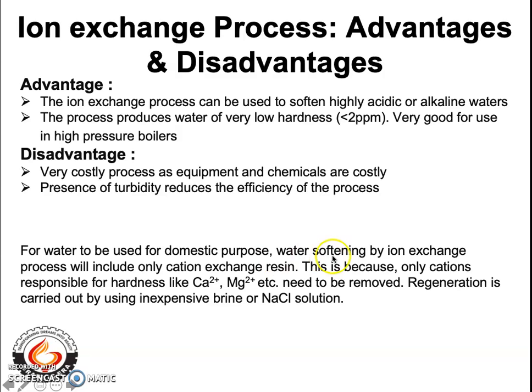For water to be used for domestic purposes, water softening by the ion exchange process will include only the cation exchange resin. This is because only the cations responsible for hardness — that is, calcium and magnesium ions — need to be removed. The anions do not have any specific disadvantage for water used for domestic purposes. The regeneration in this case is carried out using an inexpensive sodium chloride solution. This is all about the ion exchange process.